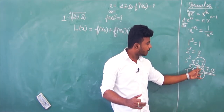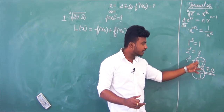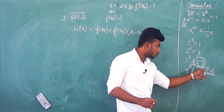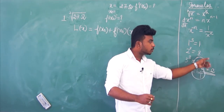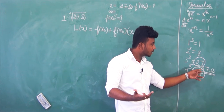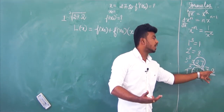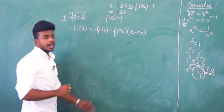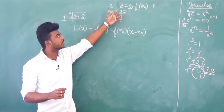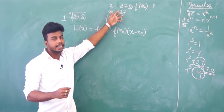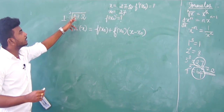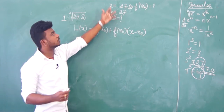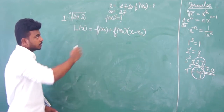27 is closer to 27.2, so we choose x0 = 27. We write x0 = 27.